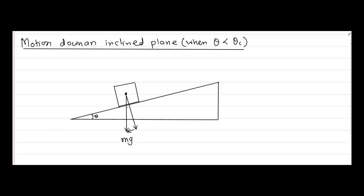If this angle is theta, we can prove geometrically that this angle is also theta. So the component along the inclined plane will be Mg sin theta and the component perpendicular to the plane is Mg cos theta. The normal reaction acts perpendicular to the surface and is equal to R.